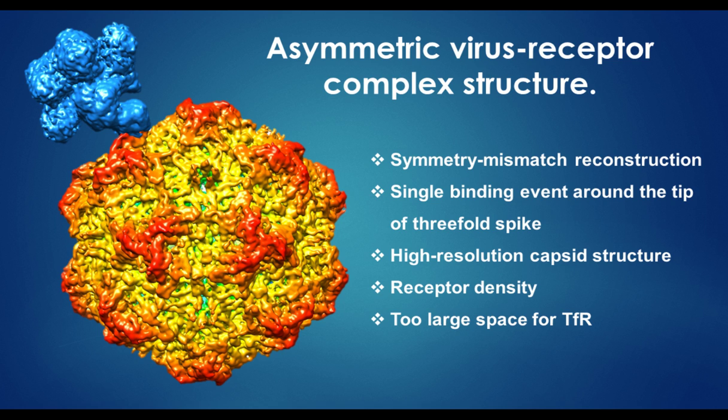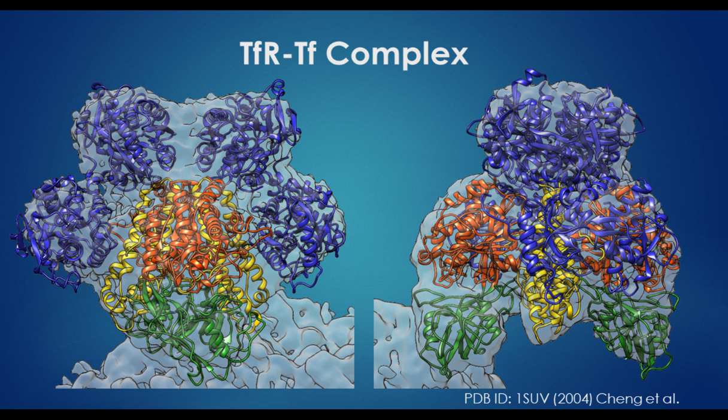That showed us or confirmed for us that the binding event did take place at the tip or that apical domain of the TFR and at the tip of the three-fold spike on the virus. We have a very nice high resolution capsid structure. It's near atomic resolution. The receptor density is better than our first blobology that I showed you before from 2007, but we're hoping to improve it. The first thing we noticed was there's too much volume for just TFR.